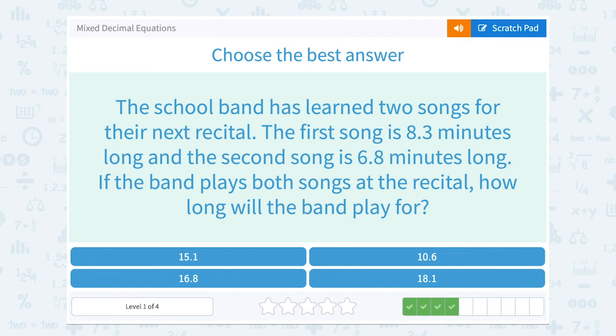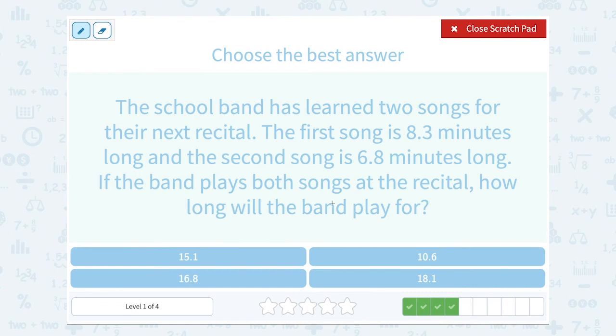The school band has learned two songs for their next recital. The first song is 8.3 minutes long, and the second song is 6.8 minutes long. If the band plays both songs at the recital, how long will the band play for? Well, if they're playing both songs, we would need to add those together to figure out the total length of time that they're playing. So we're going to say 8.3 plus 6.8 and see what we get.